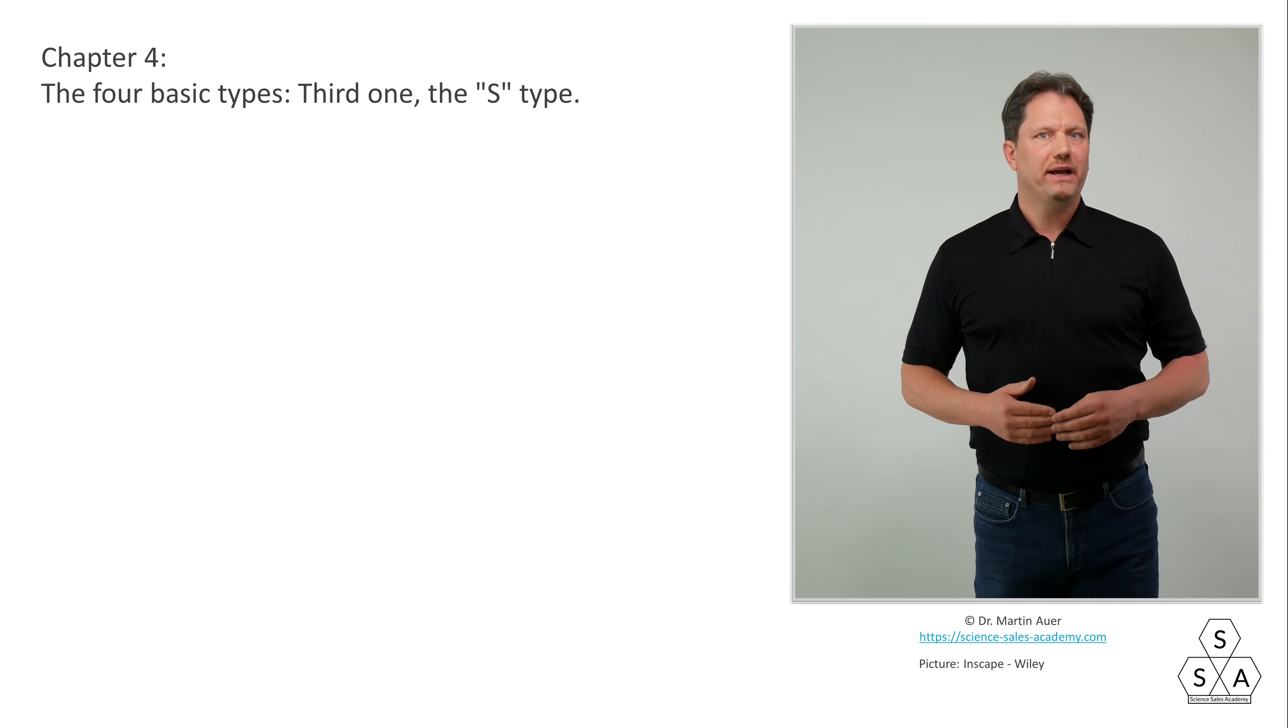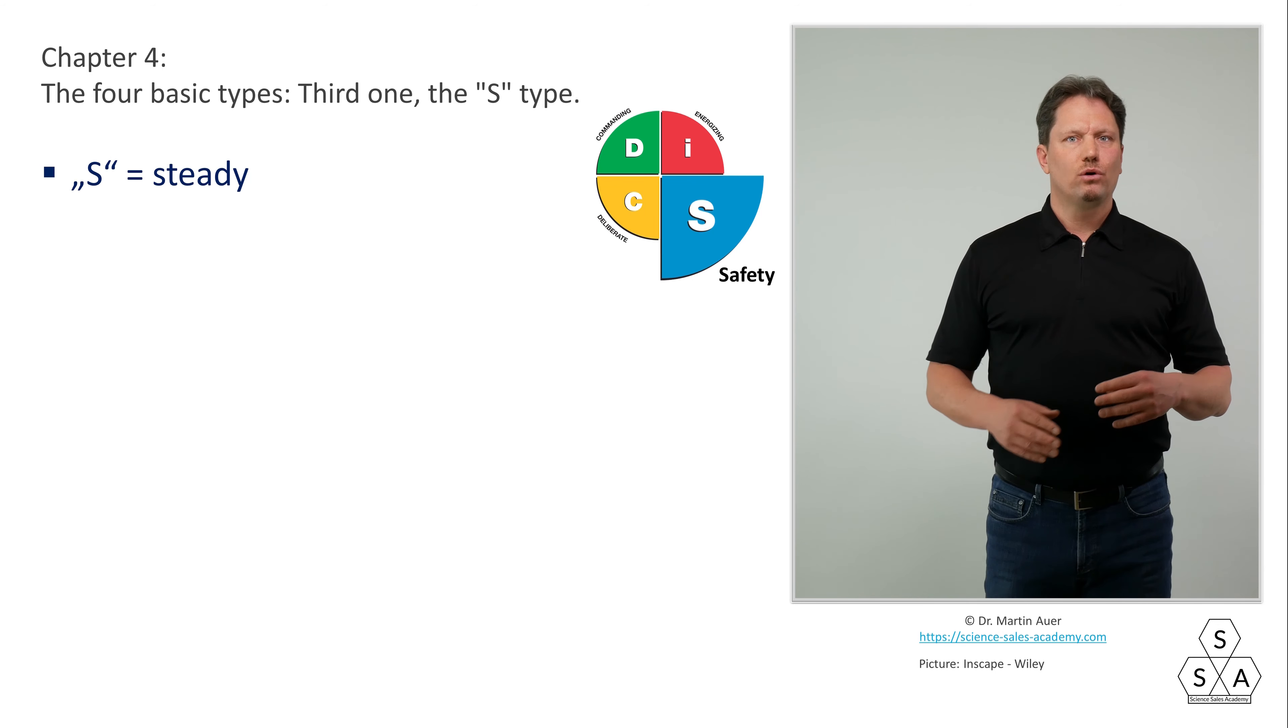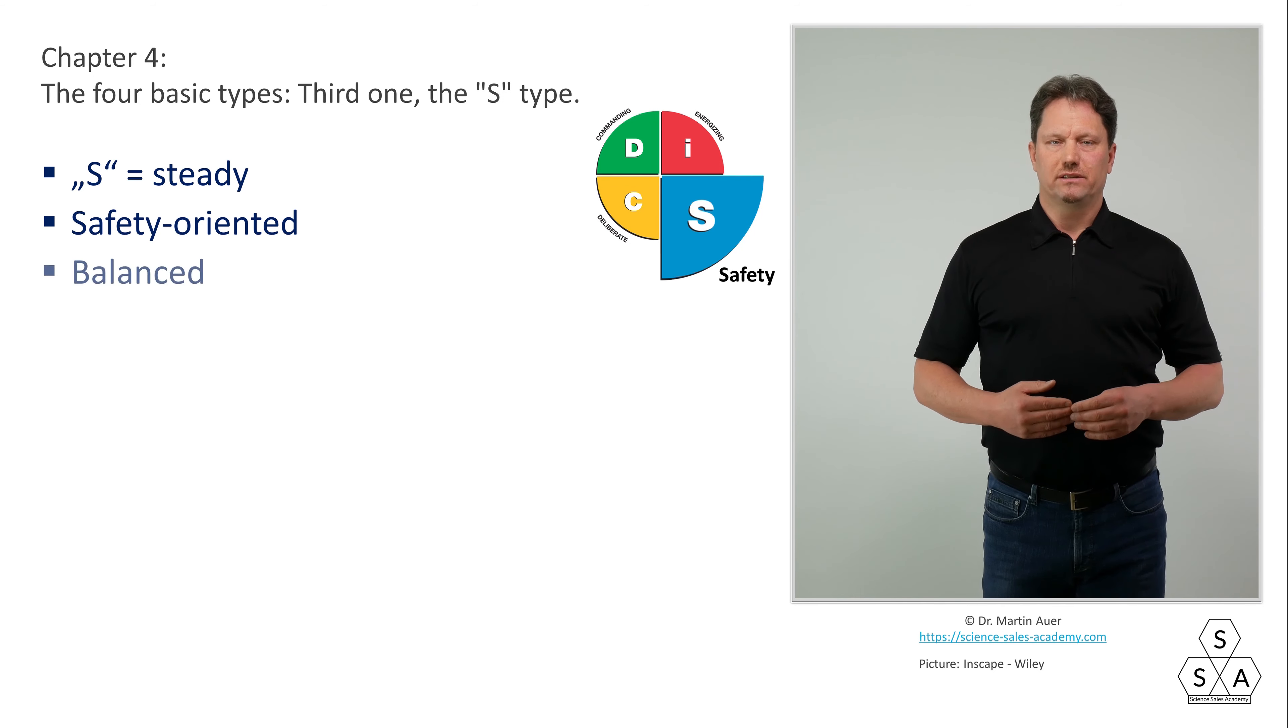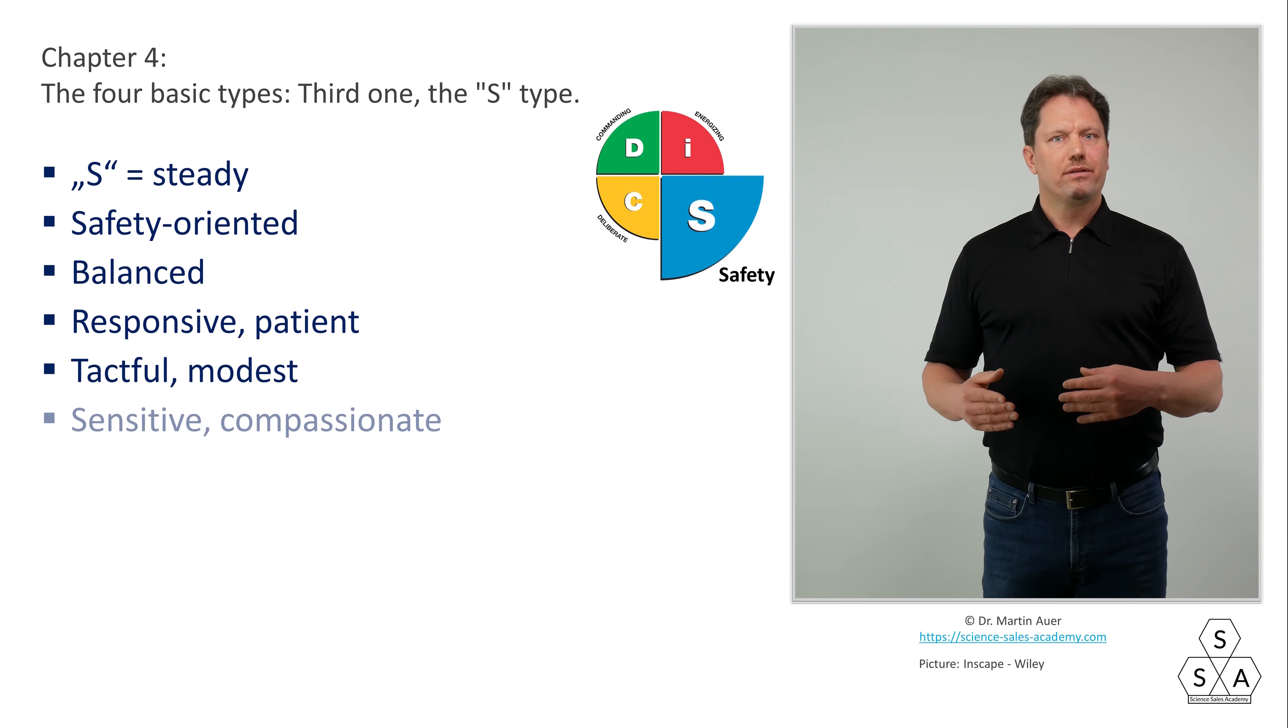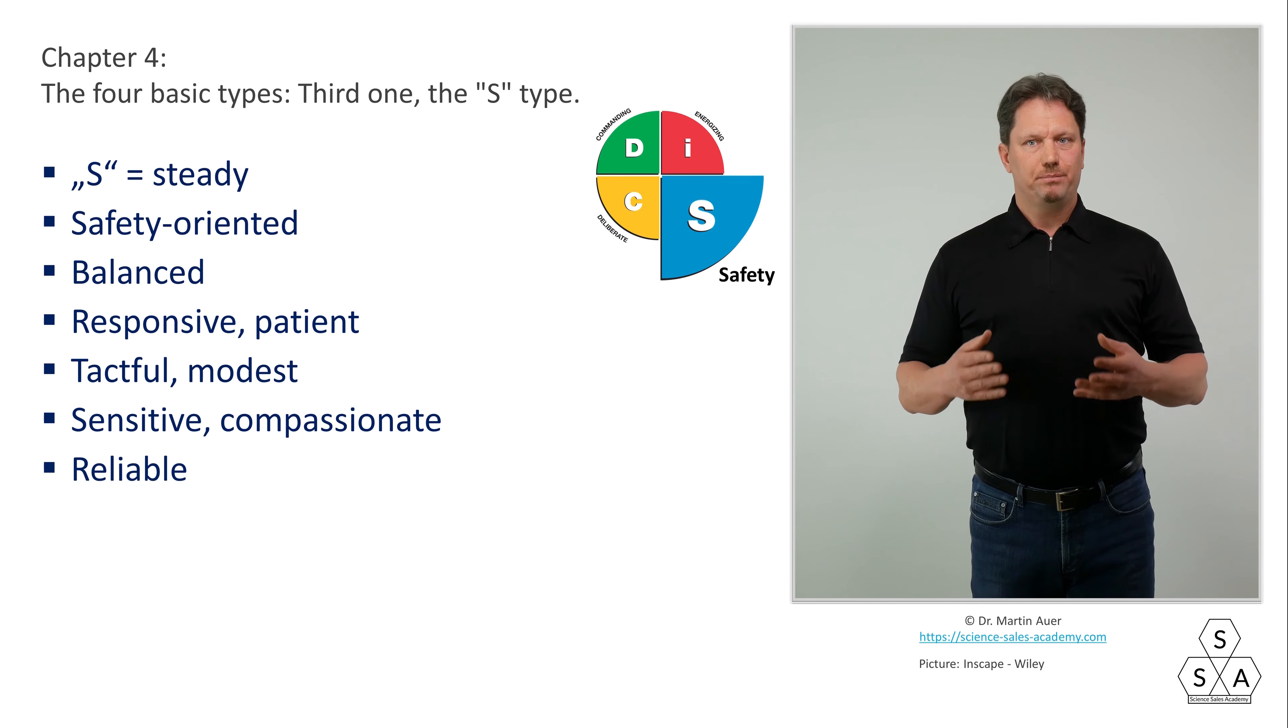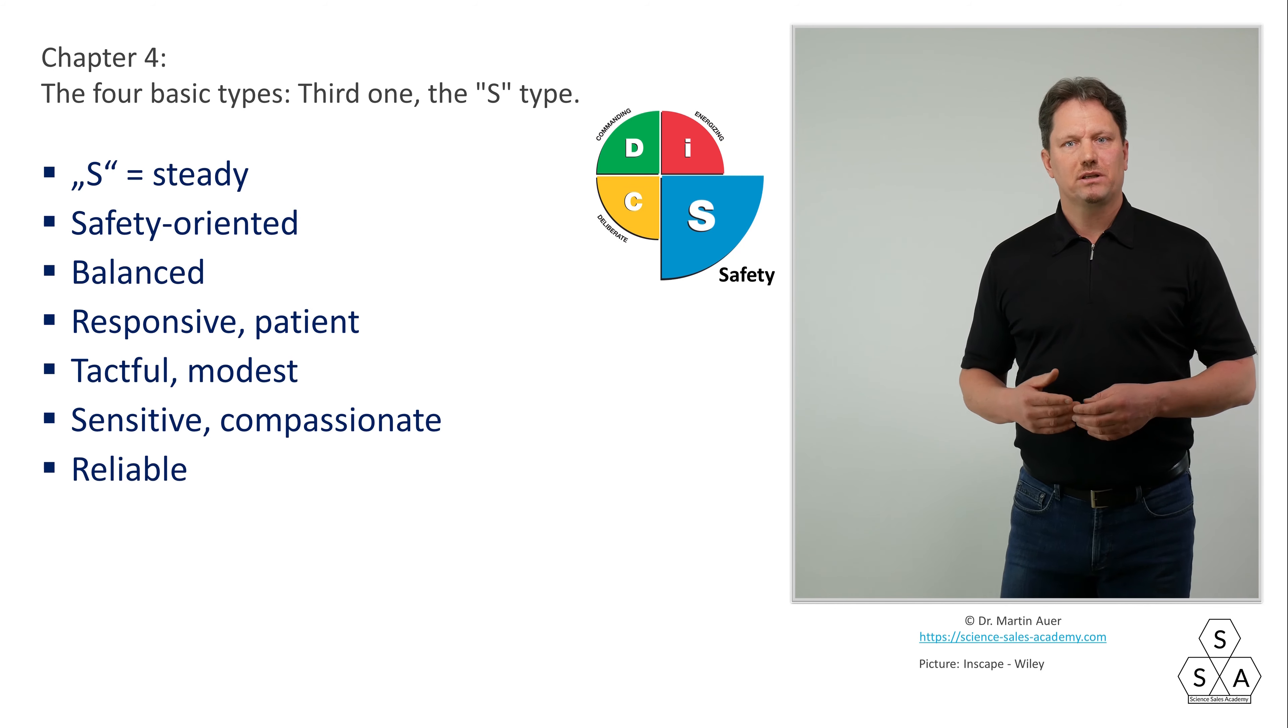Chapter 4: The 4 Basic Types - The S-Type. The next step in our circular Wiley DISC model takes us to the S-type. The S stands for steady or stable or safety. It's the blue quadrant right below. S-types are primarily safety-oriented, balanced, responsive, patient, tactful and modest. With their sensitive and compassionate manners, they are very liked colleagues and trustworthy friends. S-types are very reliable, especially when it comes to work that is rather uncomfortable that no one likes to do.